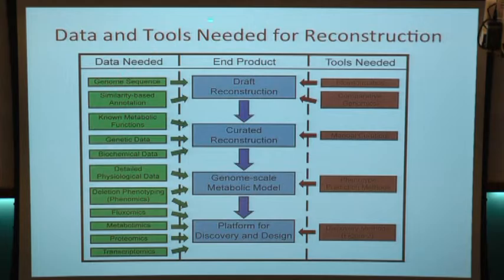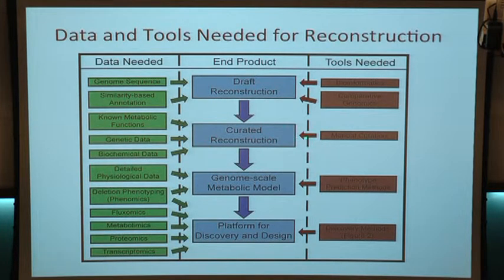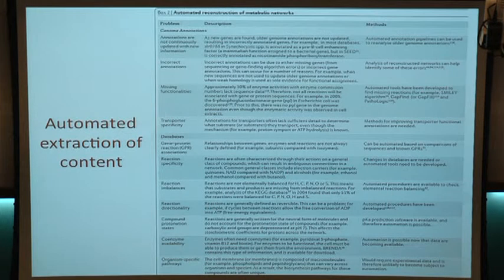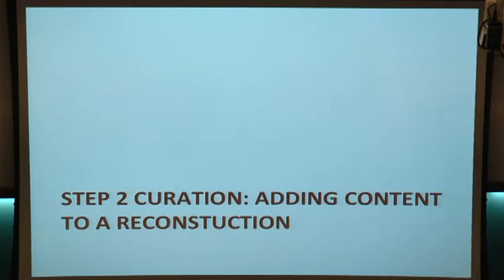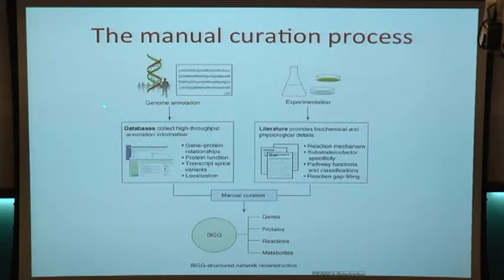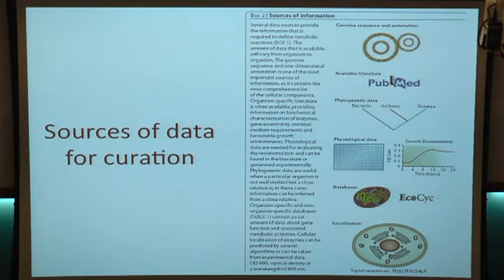The tools needed for reconstruction span multiple disciplines. Bioinformatics and comparative genomics feed into the draft reconstruction. Manual curation, which requires a background in biochemistry, is central to step two. For the models, making predictions is a computational biology exercise. As a platform for discovery, it becomes an engineering exercise. There are lots of databases and sources for data curation, including EcoCyc and KEGG, which are great repositories. Most studied organisms in terms of publications are human, mouse, E. coli, and S. cerevisiae and Staphylococcus aureus, which remain the most cited and most used reconstructions.